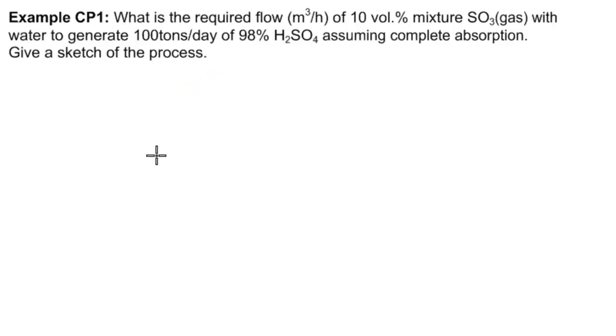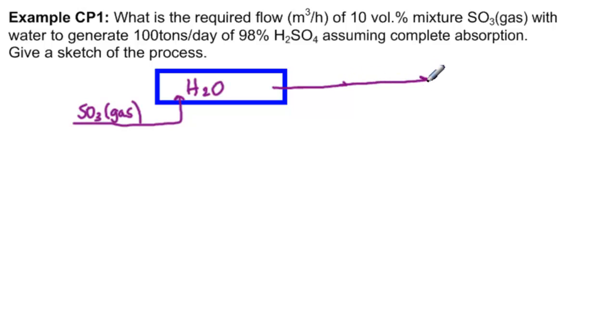So the first thing we'll do is give a sketch of the process. Here we have water, and into our water is flowing SO3 as gas, and out of here is coming 100 tons per day, of which 98% is H2SO4, and of course 2% is water.